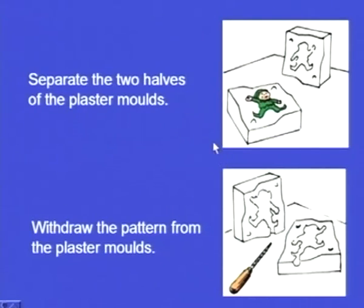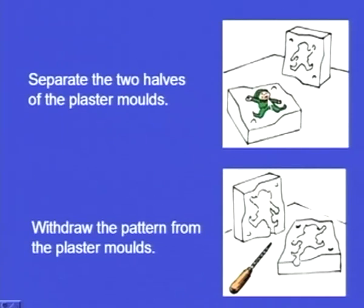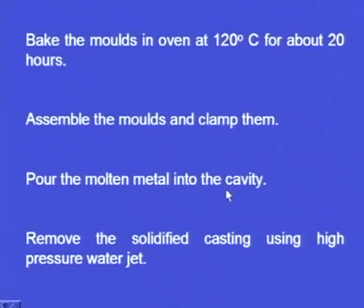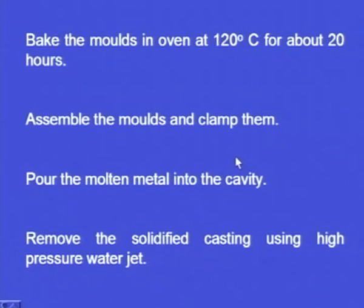Next, we separate the two plaster moulds. Inside is the pattern, which we carefully withdraw so that the cavity is not damaged. Now we have to bake the plaster moulds in an oven at 120 degrees for about 20 hours. This takes time, but is required to impart the required strength to the plaster moulds.